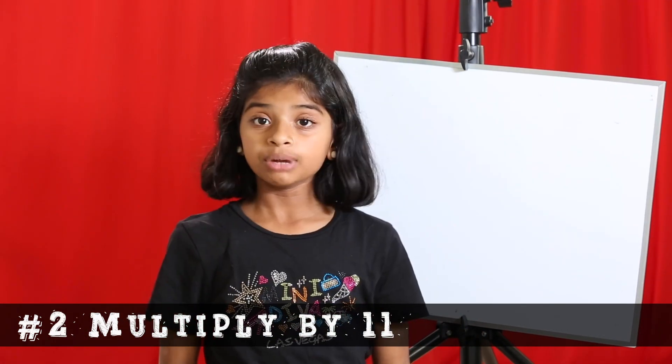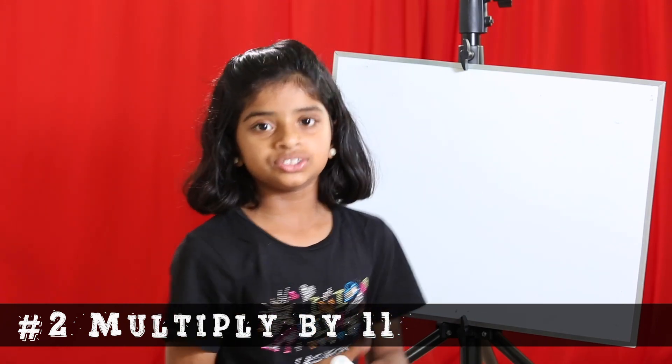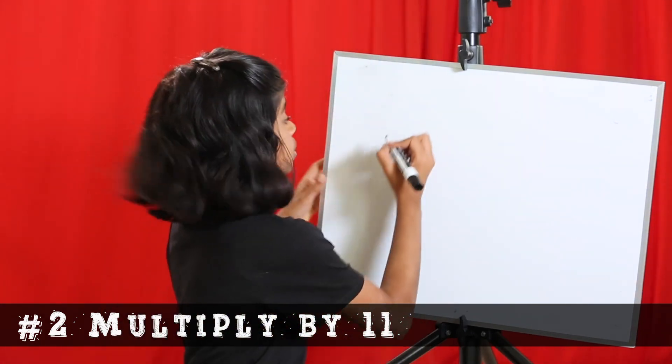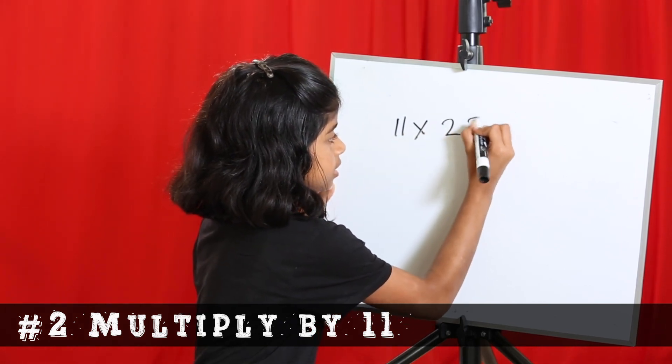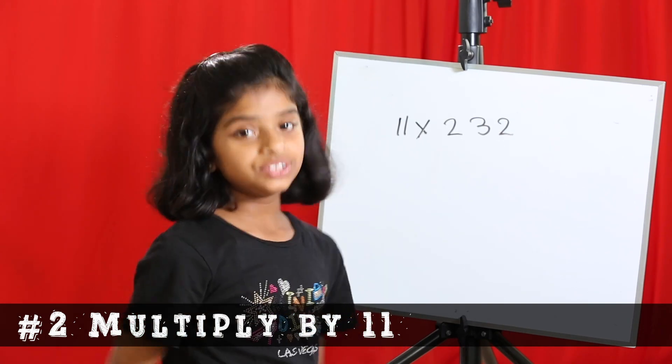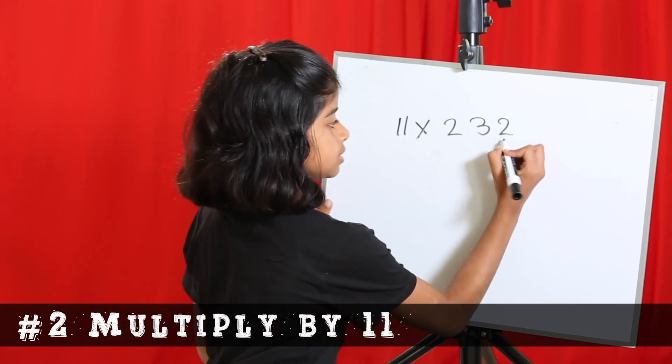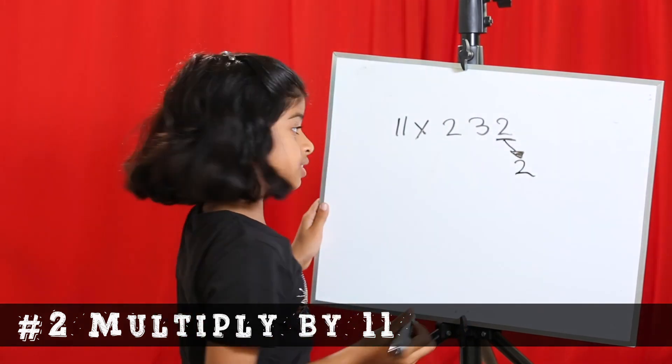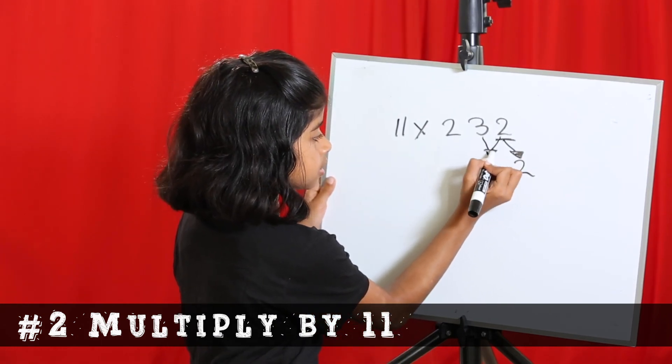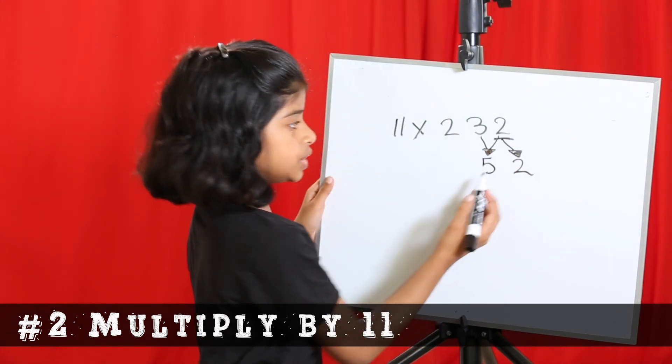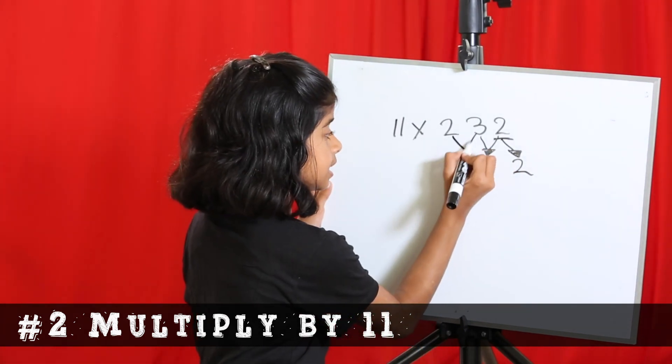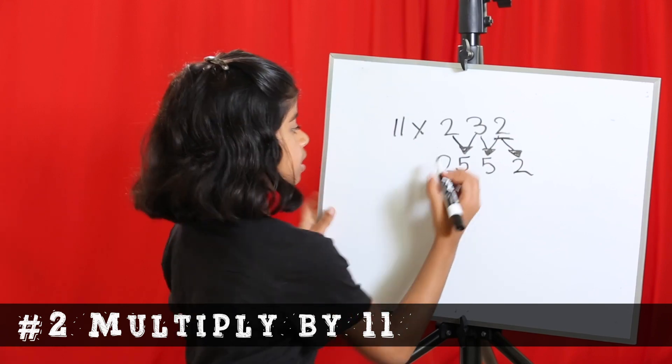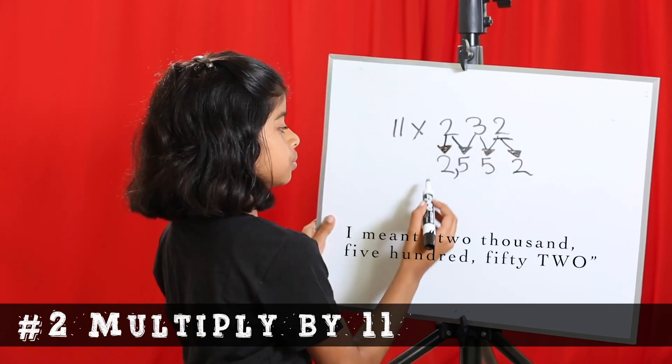Trick number 2. How to multiply by 11. Now, most people think that's really easy, like 11 times 2 is 22. But there's another trick. If you want to do 11 times 232, the trick is, first let's start from the 1's place. Copy the number down below it, so it's easier. Then take these two numbers and add them together, which equals 5. Then take these two numbers and add them together, which also equals 5. Then take the last number and copy it down. So that would be 2,555.